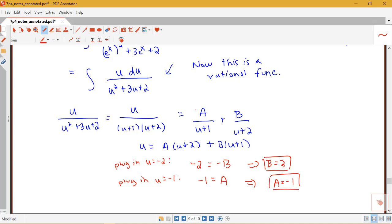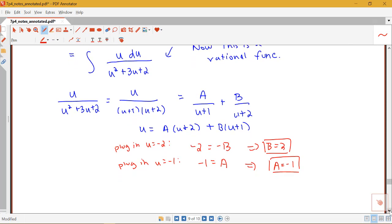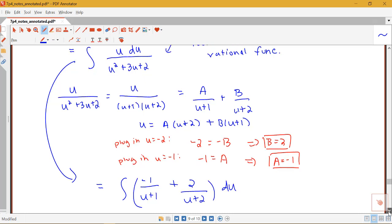So with those two values we can rewrite our integral here. So notice I'm going to have here my integral of u du over u squared plus 3u plus 2 is equal to an integral of a over u plus 1. So that'll be negative 1 over u plus 1 plus b of 2 over u plus 2 du. So we see how that drastically simplified what we were working with.